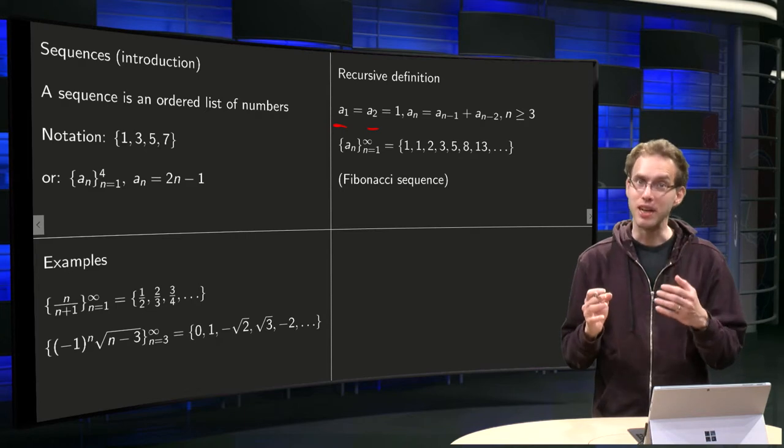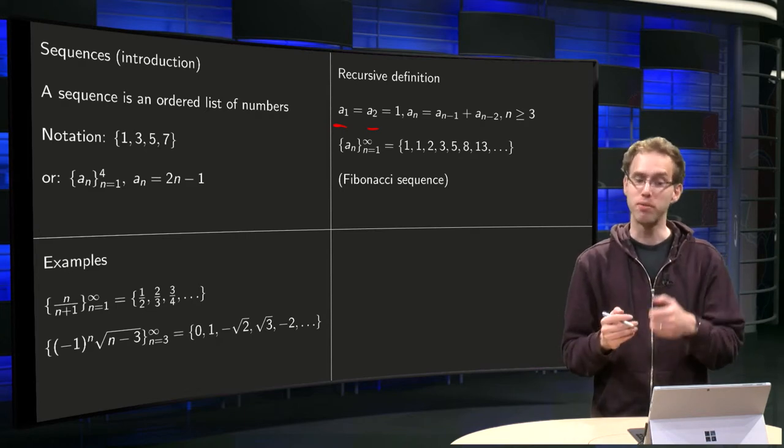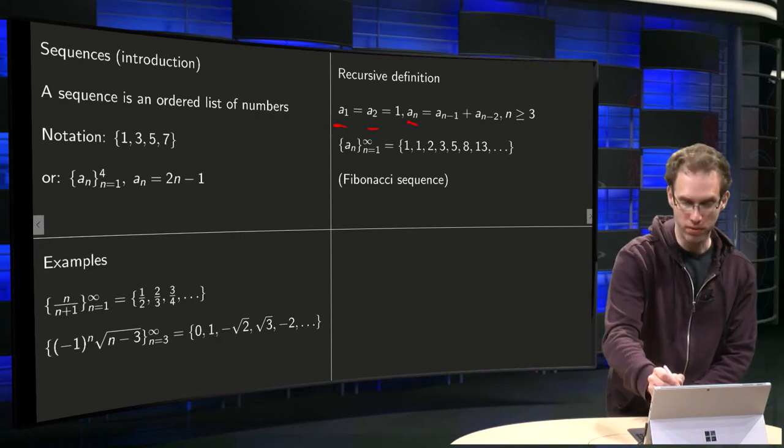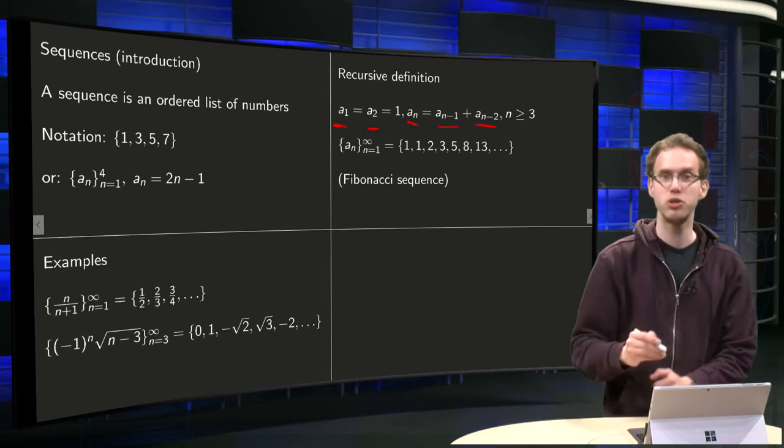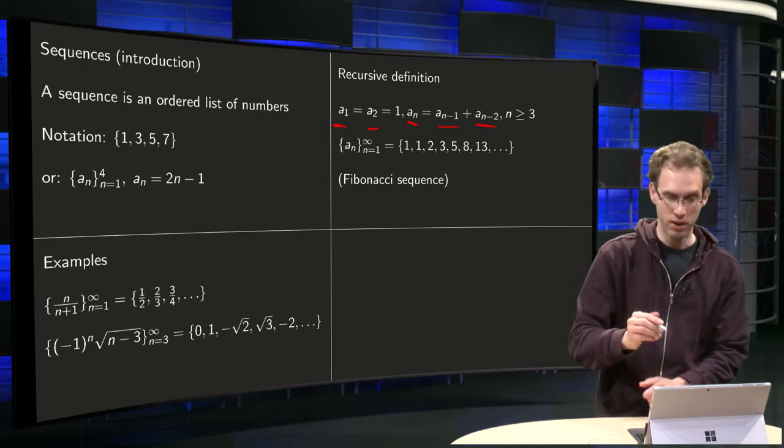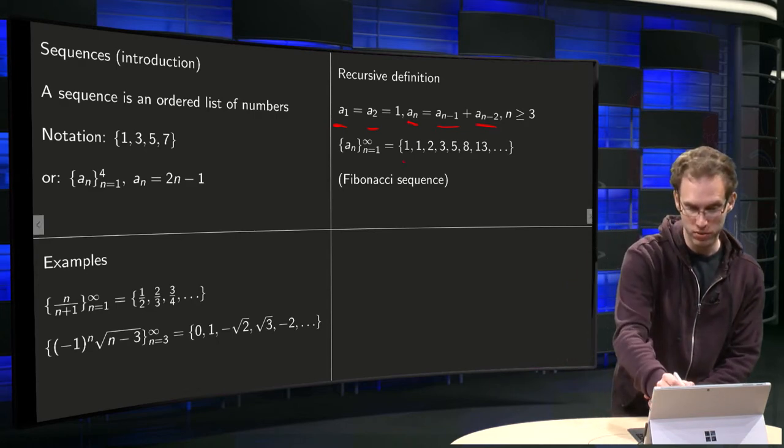And we say that the next element is the sum of the previous two elements. So a_n is the sum of a_{n-1} plus a_{n-2}, for n bigger or equal than 3. So what do we get then? Well, we know our first two elements, where 1 and 1.